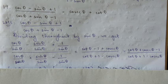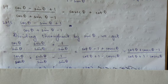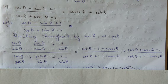So cos by sin gives cot alone, sin by sin cancels, minus 1, minus 1, plus 1 by sin gives cosec theta. Similarly on the other side: cos by sin gives cot, sin by sin gives 1, plus 1 by sin gives cosec. So we have: cos theta minus 1 by sin gives minus cosec theta, and minus 1, minus 1, minus 1.